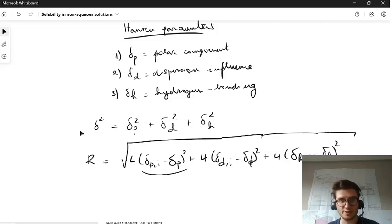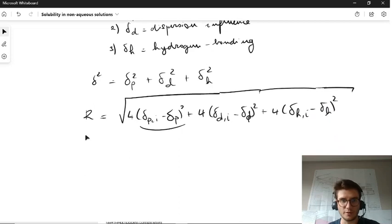That's how you actually calculate the r value, and the r value has three different scenarios. If the r is actually larger than one, which means that if the difference between the Hansen parameters becomes too big, they will not dissolve.